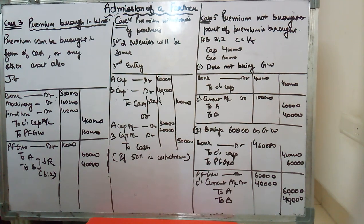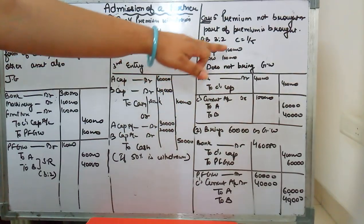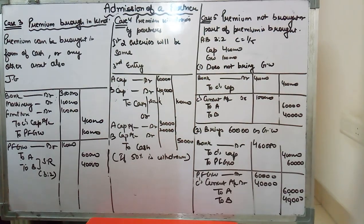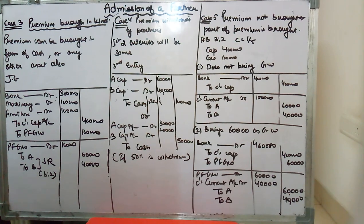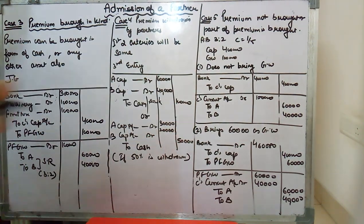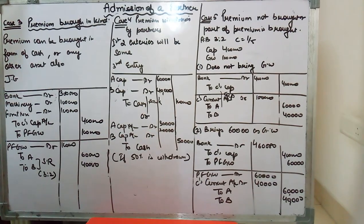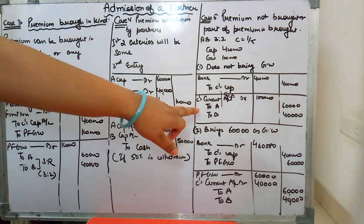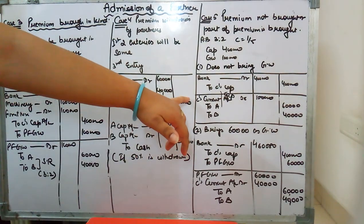Case 5 is when a new partner is admitted but is unable to bring premium in cash or kind, or brings only a part of it. For example, C is admitted and must bring capital of 4 lakh and goodwill of 1 lakh, but brings nothing for goodwill. The first entry is bank to C's capital — only 4 lakh. Since A and B have sacrificed their profit, their accounts must be credited. So C's capital account is debited and credit is given to old partners in their sacrificing ratio.